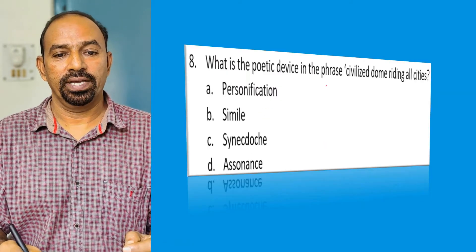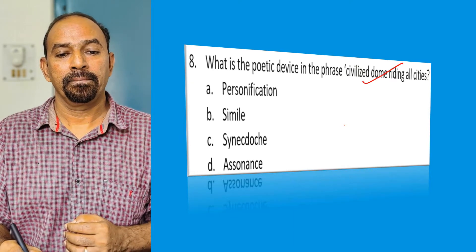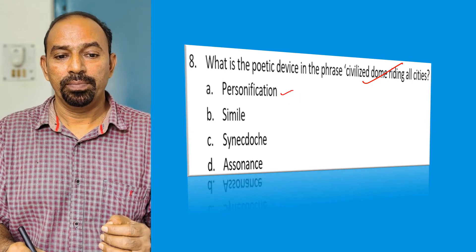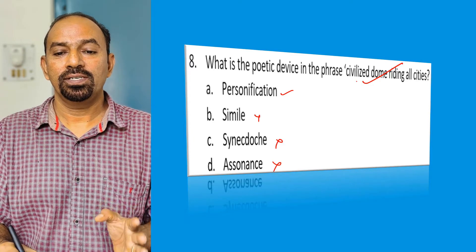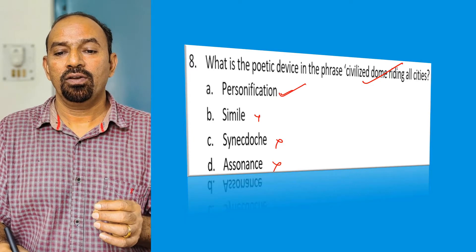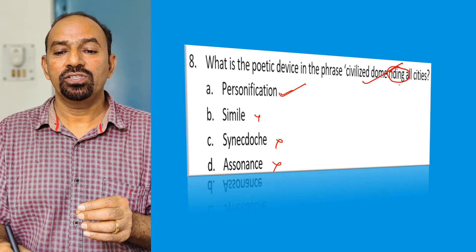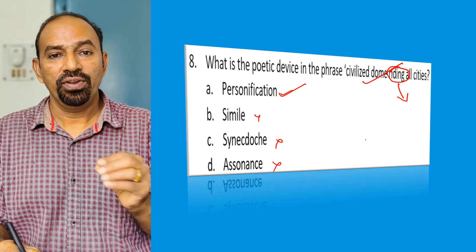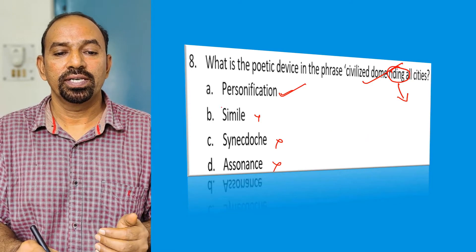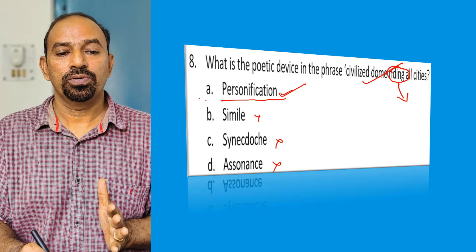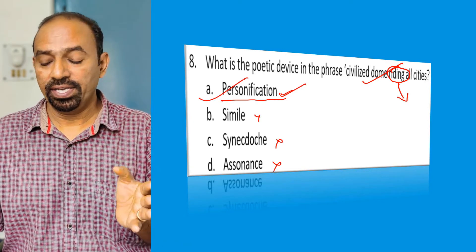Question eight: What is the poetic device in 'civilized doom riding all cities'? The answer is personification. Riding is a human activity. When human qualities are attributed to non-human things, it is called personification. So personification is the poetic device used in 'civilized doom riding all cities'.